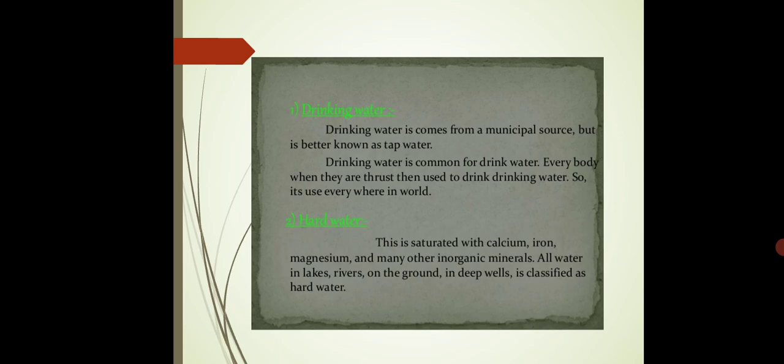Drinking water and hard water. Drinking water definitely comes from the natural sources which is supplied from the municipal source and before supplying the water is purified by the chlorination treatment. Next is hard water. This contains the some ions like calcium, magnesium, iron and many other inorganic minerals. This water are found in the lakes, rivers, on the ground, in the deep wells and they are known as the hard water.